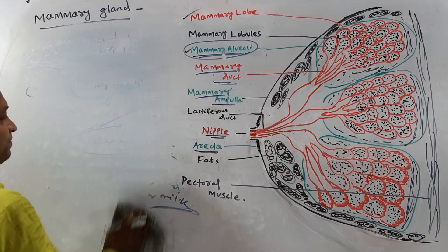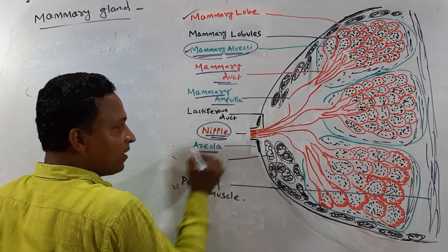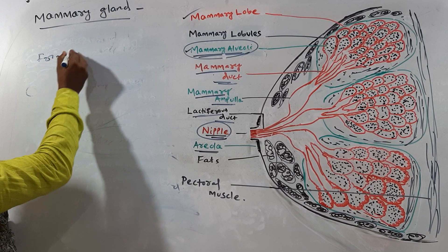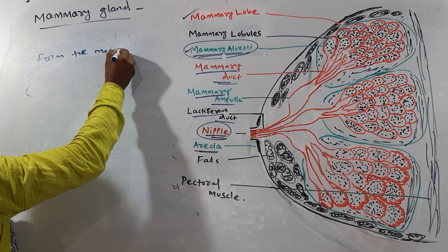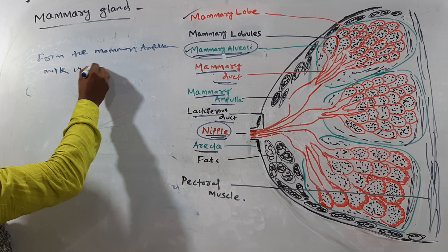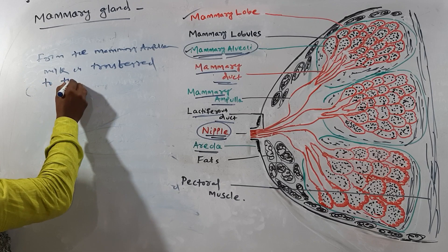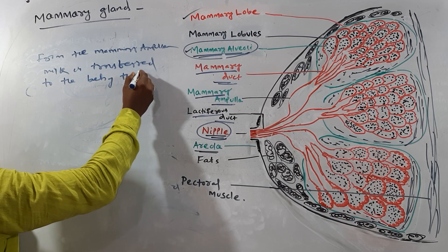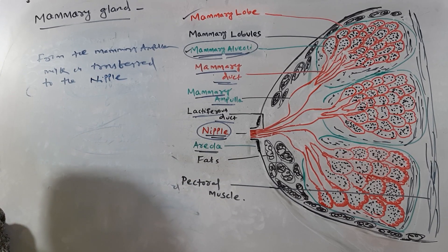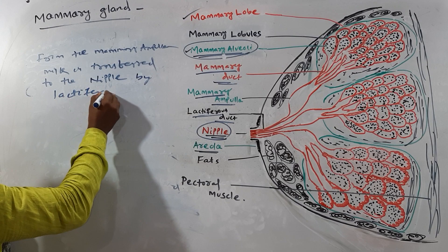From the mammary ampulla, milk is transferred to the nipple via the lactiferous duct, and from the nipple it goes to the baby's mouth.